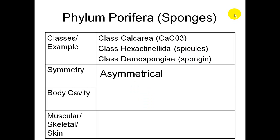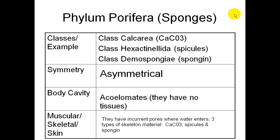There is no symmetry in a sponge — it's asymmetrical. Their body cavity: they don't have any tissues, so they're acoelomates. For their muscular, skeletal, and skin structures, they have incurrent pores where water will enter. There are three types of skeleton material: calcium carbonate, spicules, and spongin.